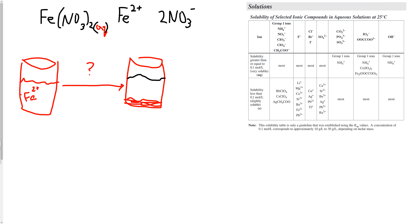We have to do the reverse: look in the solid section of the chart for Fe²⁺. In the fluoride column, we find Fe²⁺ — that means when Fe²⁺ is hooked up with F⁻ ions, it will precipitate. So we need to find a way to bring some F⁻ ions into the mix.